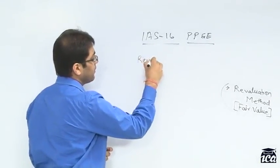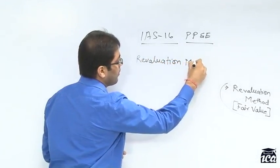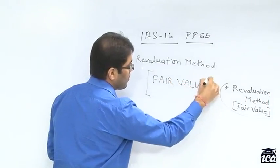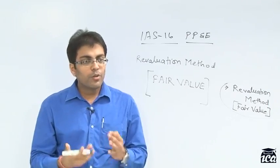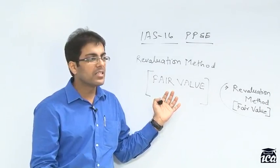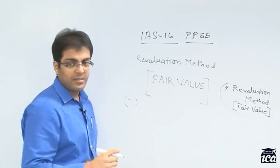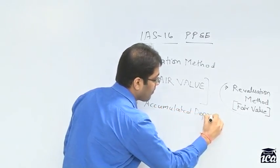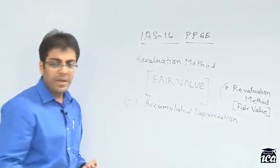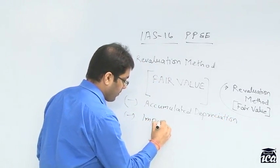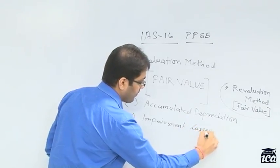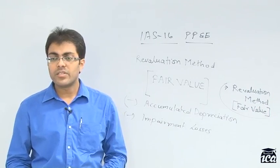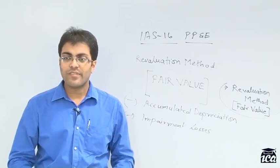Under the revaluation method, you would value your asset at fair value. This fair value means you will either appoint a valuer or determine what value you would fetch if you sold the asset today. You will still depreciate this, so any accumulated depreciation would still apply. Any impairment would still apply. We are not getting into how to determine fair value as that is not prescribed under IFRS and is not what we are discussing right now.